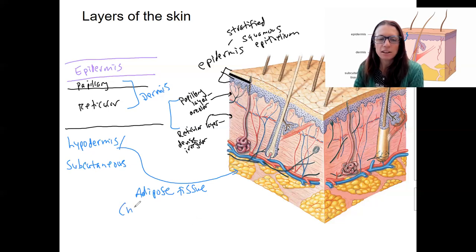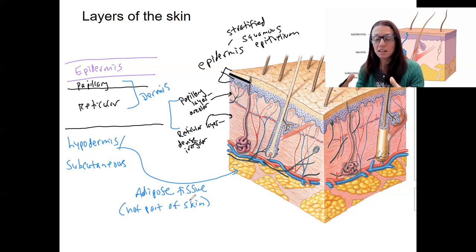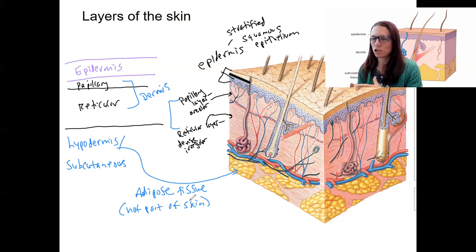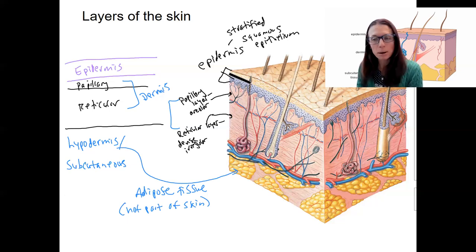The hypodermis is technically not part of the skin. Adipose tissue, as you have seen, is underneath many different organs — it insulates and connects organs to the structures around them, such as the trachea and esophagus. So those are the layers and a little bit about their functions.